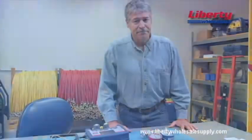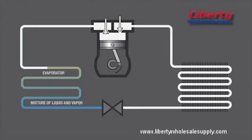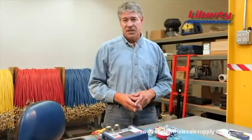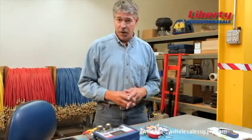First, let's look at superheat. As refrigerant enters the evaporator, it's in a liquid state. As heat is added to the liquid, it will turn to a vapor at its boiling point or saturation temperature. After the refrigerant has boiled to vapor, any temperature of the vapor above the saturation temperature is the superheat. Superheat is then any temperature of a gas above the boiling point for that liquid. The superheat calculation lets you know if the amount of refrigerant flowing into the evaporator is appropriate for the load.